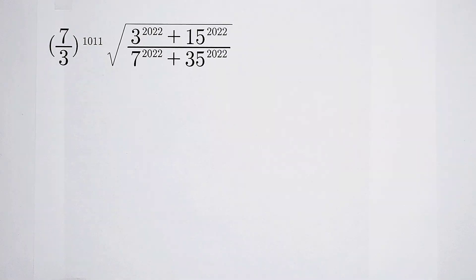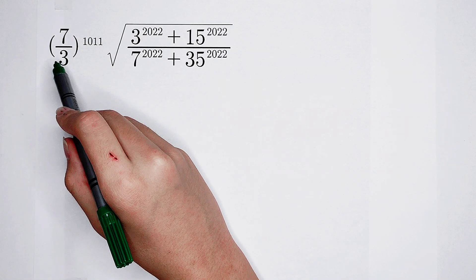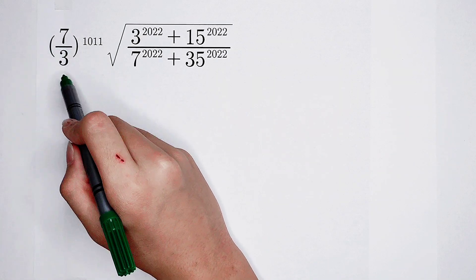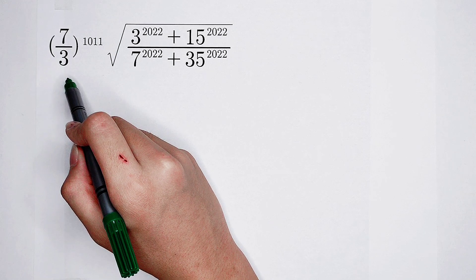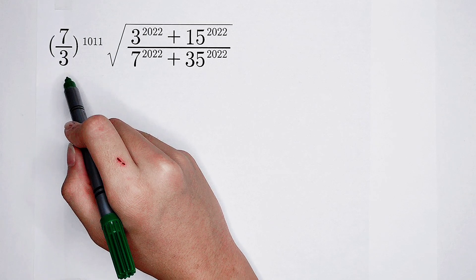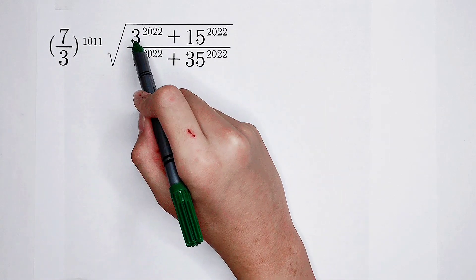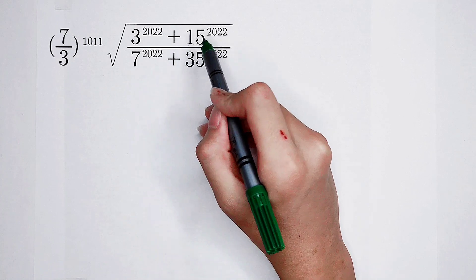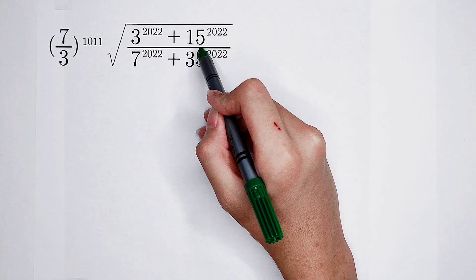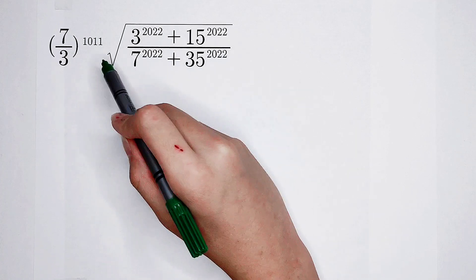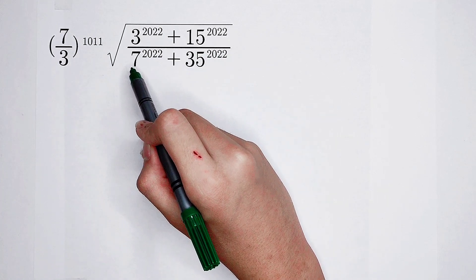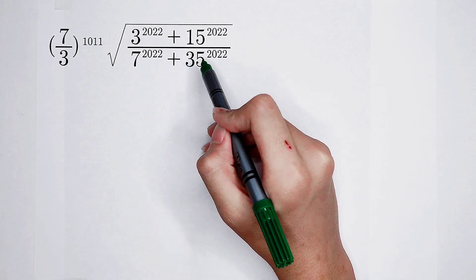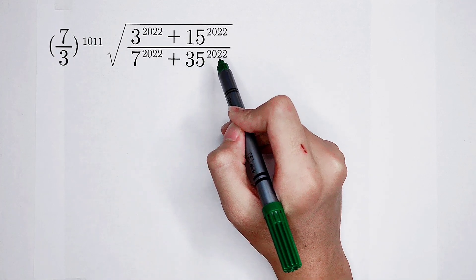Welcome to Math Winnow. Calculate 7 over 3, all to the power of 1011, then times square root of 3 to the power of 2022, then plus 15 to the power of 2022, then all over 7 to the power of 2022, then plus 35 to the power of 2022.